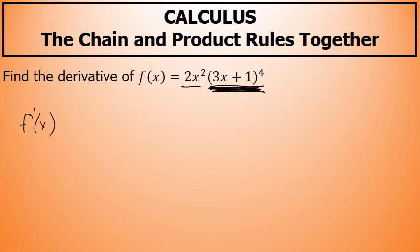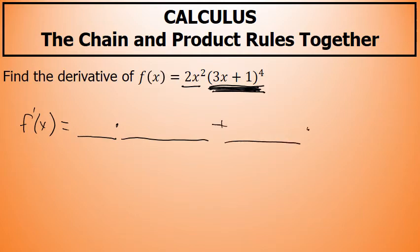A derivative using the product rule is going to be the first factor unchanged times the derivative of the second factor, plus the second factor unchanged times the derivative of the first factor. So there will be two terms in this derivative, and each term will have two factors.